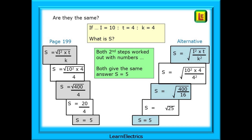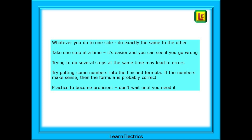So it doesn't matter which formula you find for S — both give the same answer, and this is useful to know. When rearranging or transposing formulas, remember the basic rules: whatever you do to one side, do exactly the same to the other. Take one step at a time — it's easier and you can easily see where you go wrong. Trying to do several steps at the same time may lead to errors. Try putting some numbers into the finished formula; if the numbers make sense, the formula is probably correct. And practice to become proficient — don't wait until you need to use the formula. With time you'll start to become quicker and begin to find your own method of working efficiently.